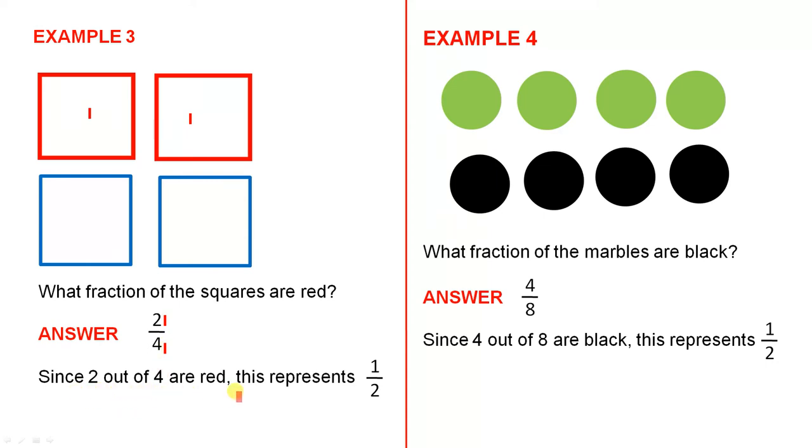Since 2 out of 4 are red, this represents one-half. Because if we share those squares between two people, they get 2 each. So 2 of the squares represents half of the number of squares.